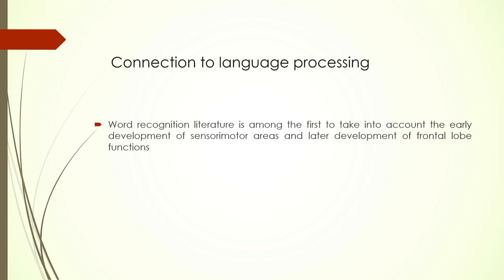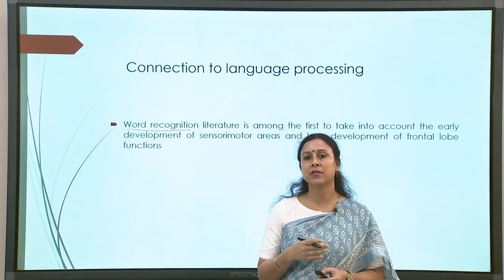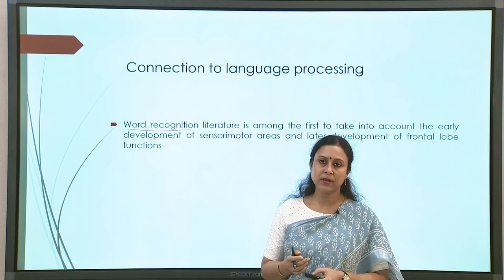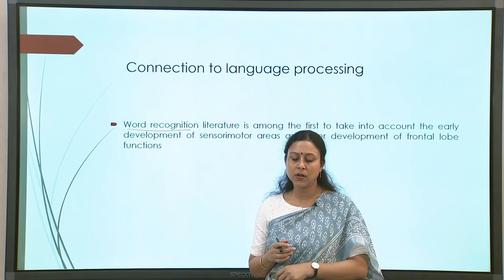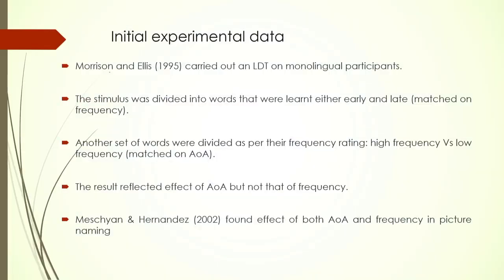How is the connection to language meaningful in this scenario? One of the first studies to map sensory motor development and other developments in the brain with language function, and to see if there are differences across first versus second language, was in the word recognition literature. It goes back to 1995, one of the very well known studies from that time. They carried out an LDT — a lexical decision task, a simple task where participants have to check among different letter strings to determine whether they are a word or not.